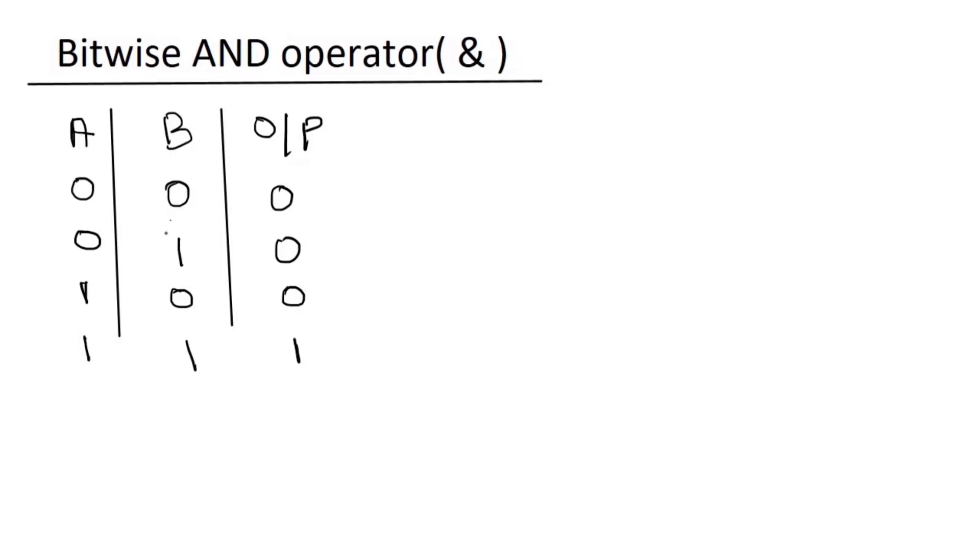If any one of the input is 0, then the output is always 0. Here both the inputs are 1, so the output is 1. Let's take an example.